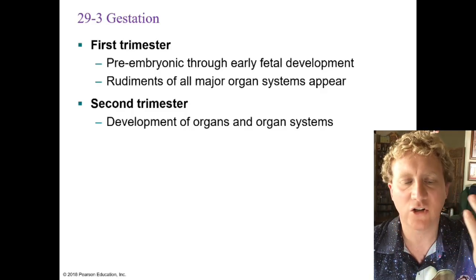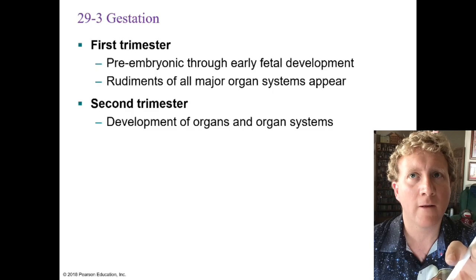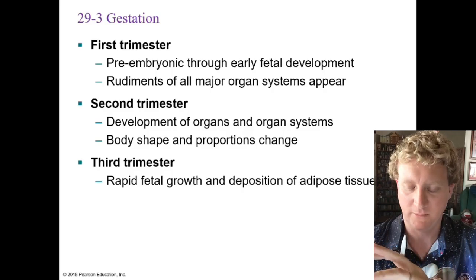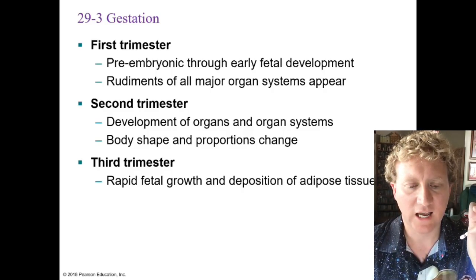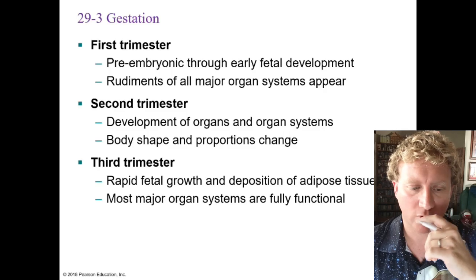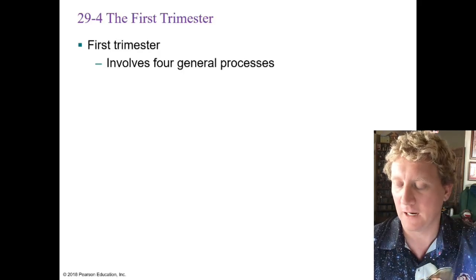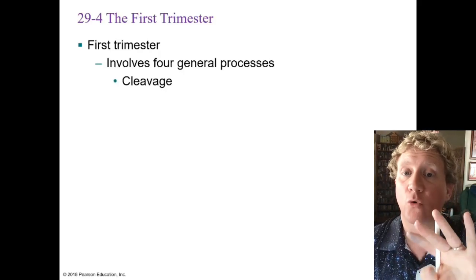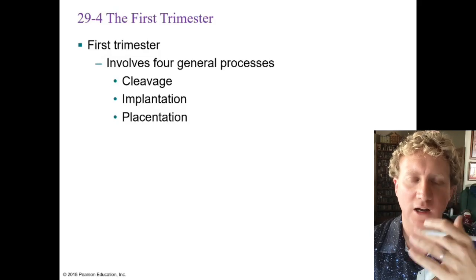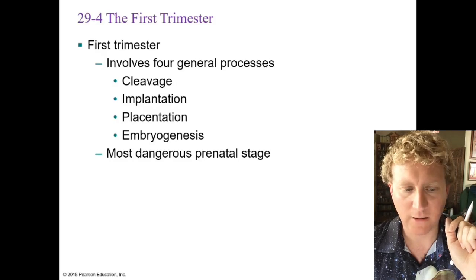The second trimester continues development of organs and organ systems; body shape and proportion change and the baby starts looking less like a weird lizard and more like a baby. The third trimester is characterized by rapid growth and deposition of adipose tissue — they chunk up — and most major organ systems are fully functional. In the first trimester there are four general processes: cleavage, implantation, placentation, and embryogenesis.